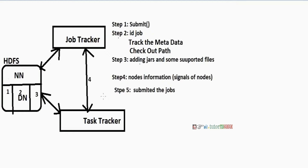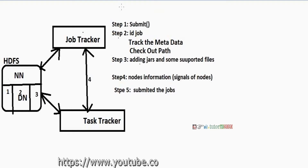First, the job tracker submits the job method, then assigns one ID to a particular job, then tracks the metadata, then checks the output path. The job tracker is checking the output path.